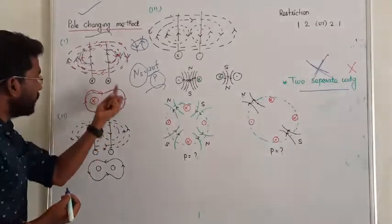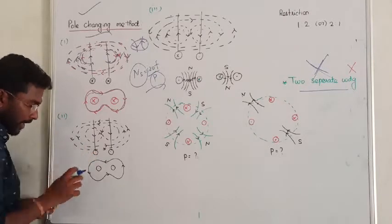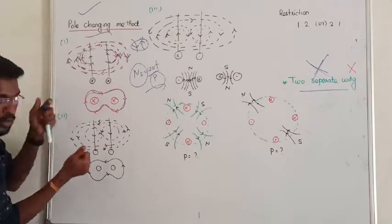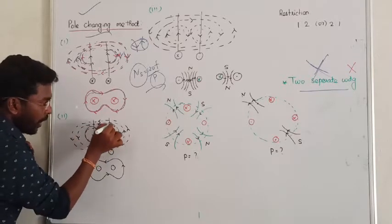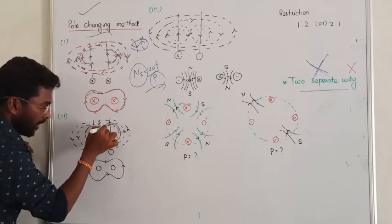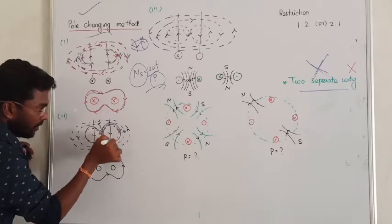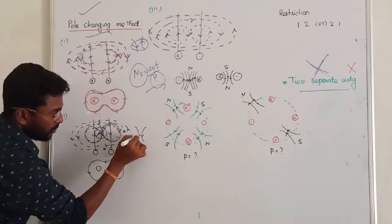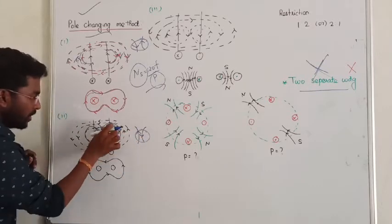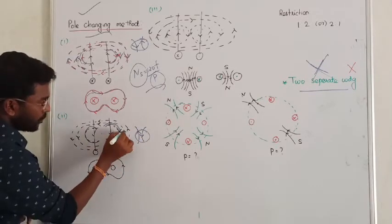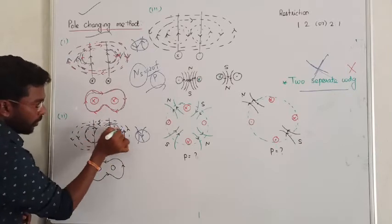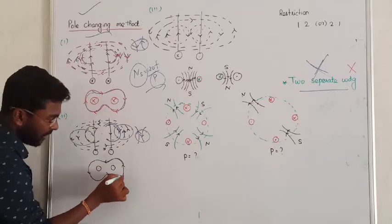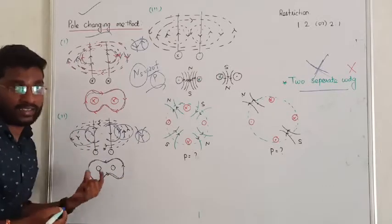Now consider the opposite case: if two currents are both coming outside, flux rotates counterclockwise. At the center point, both fluxes are going in the same direction and get added. On the outer side, the fluxes are going in opposite directions and get cancelled. Again, they act as a single connector.